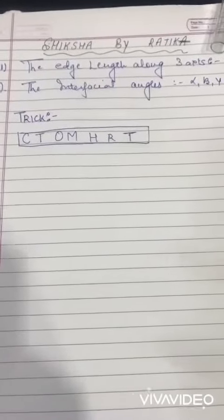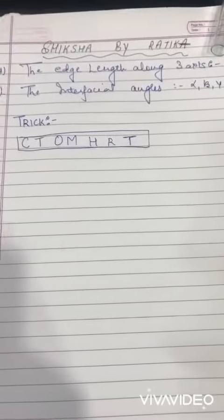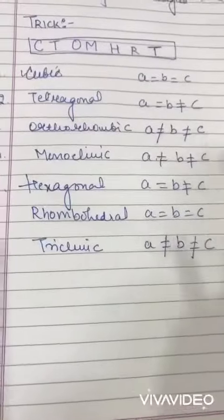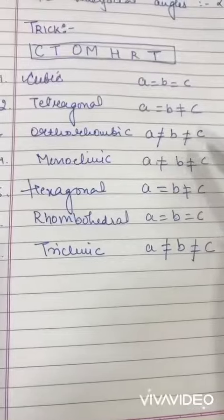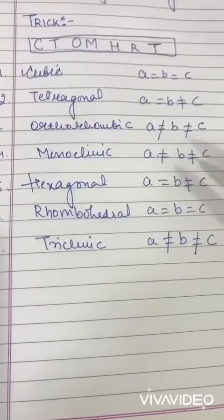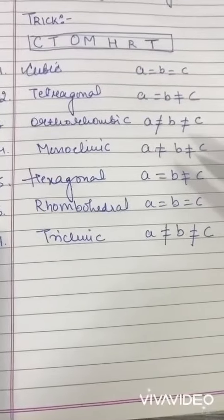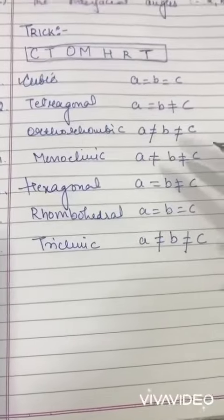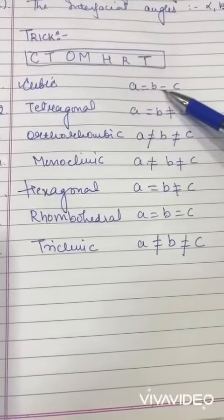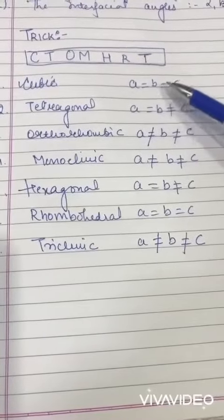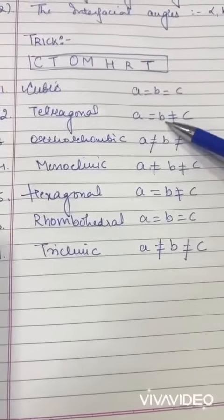So let's start with the trick. What is the full form for C T O M H R T? It's Cubic, Tetragonal, Orthorhombic, Monoclinic, Hexagonal, Rhombohedral, Triclinic. In cubic, you can see all the axial distances are equal: a equals b equals c. But in second case, b is not equal to c. In third case, these three are not equal.